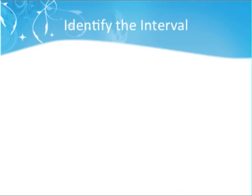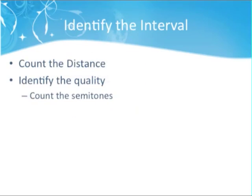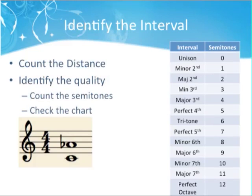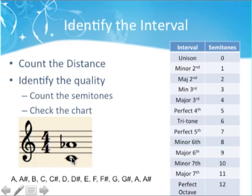Let's identify an interval. We need to count the distance first, then identify the quality by counting semitones and checking the chart. We've got C to A-flat. Count the distance: C, D, E, F, G, A — that's six, so it has to be some type of a sixth. Now count the semitones: 1, 2, 3, 4, 5, 6, 7, 8. We've got eight semitones. On the chart, a minor sixth equals eight semitones — that checks out. It is a minor sixth.